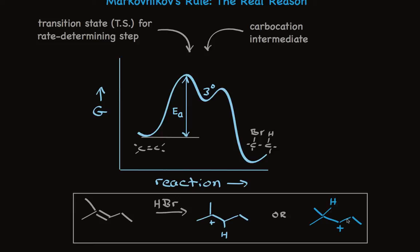And we're wondering if this tertiary carbocation is favored or formation of the secondary carbocation is favored. Well, secondary carbocations are less stable than tertiary carbocations. So the energy diagram of the first step for formation of the secondary carbocation looks like this.